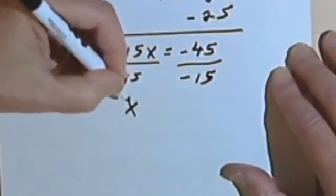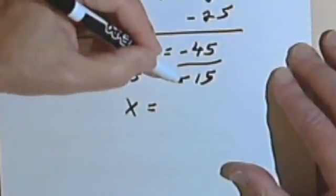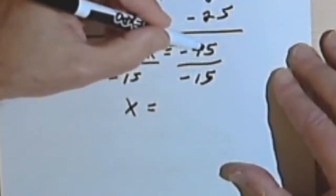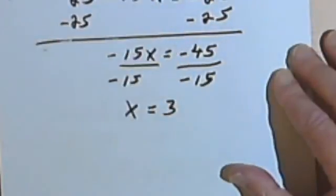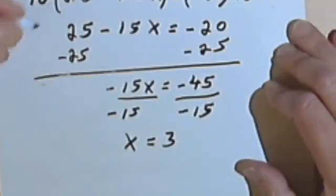So on the left I've got my x. On the right I've got negative divided by negative is positive, so I've just got to divide 45 by 15. 45 divided by 15 is 3. So 3 should be my answer. And we could check that.